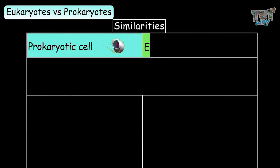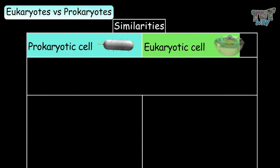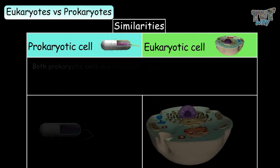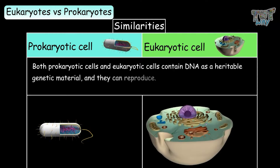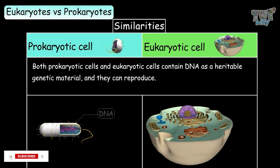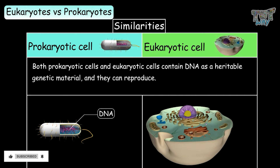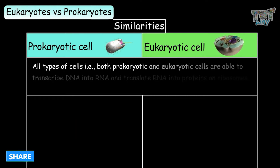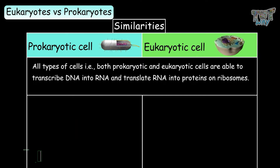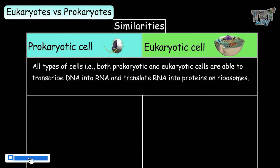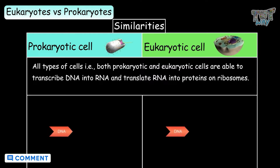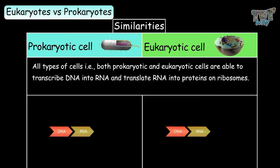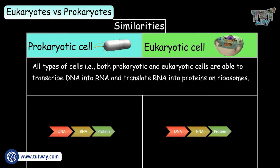Now we will learn some similarities between prokaryotic cells and eukaryotic cells. Both contain DNA as heritable genetic material and they can reproduce. All types of cells are able to transcribe DNA into RNA and translate RNA into proteins on ribosomes.